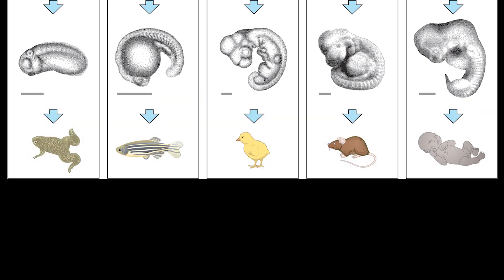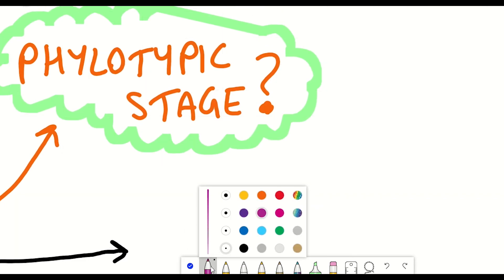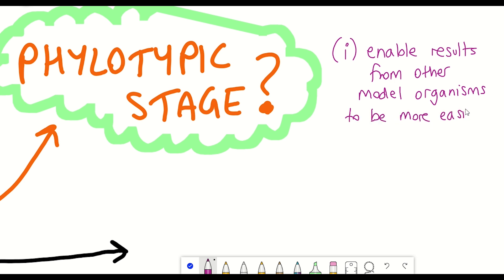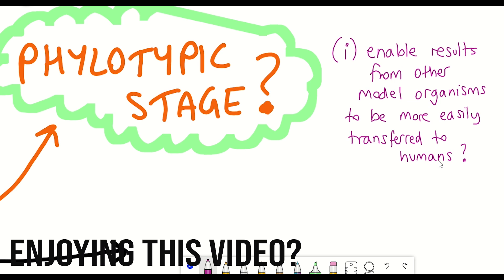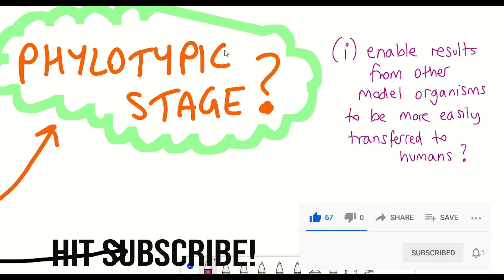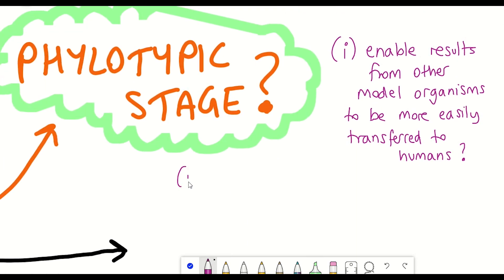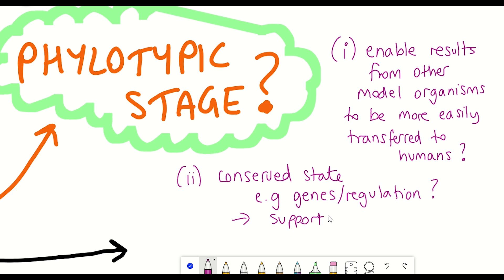Take a look at these images: which one of these early embryos do you think will develop into a human? Well, it turns out the one that will develop into a human is the one on the far right. The phylotypic stage has two implications: firstly, results from studying model organisms at early embryogenesis could be transferable to human embryogenesis — important given that human embryos don't reach the phylotypic stage until four weeks after fertilization. Secondly, this stage may represent ground zero, as it suggests this state is evolutionarily conserved and therefore very important.